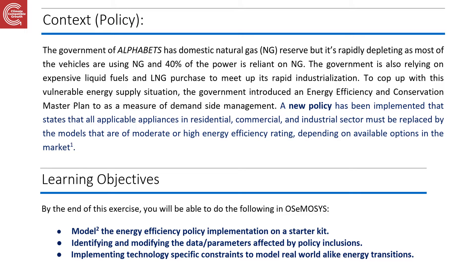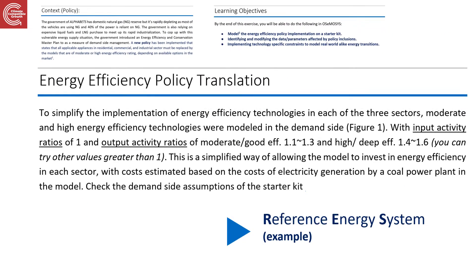By the end of this exercise, we will be able to do the following in OSeMOSYS: model the energy efficiency policy implementation on a starter kit; identify and modify the data parameters affected by the policy inclusions; and implement technology-specific constraints to model real-world-like energy transitions. In our exercise, demand is divided into three major sectors: industrial, commercial, and residential. To simplify the implementation of energy efficiency technologies in each of these sectors, moderate and high efficiency technologies were modeled on the demand side.